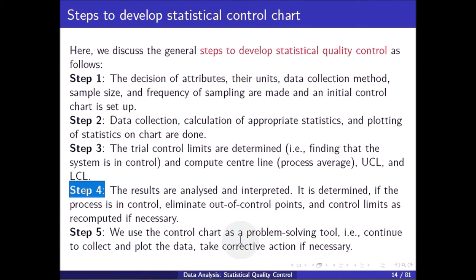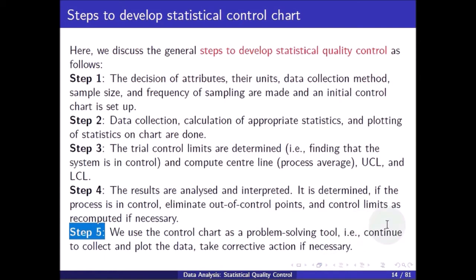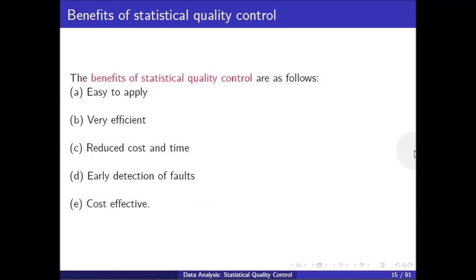Step 5: use the control chart as a problem-solving tool — continue to collect and plot data and take corrective action if necessary. The benefits of statistical quality control are: easy to apply, very efficient, reduces cost and time, enables early detection of faults, and is cost effective.